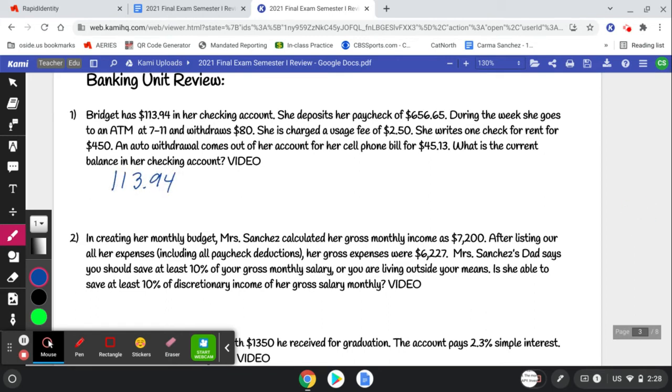So let's start with her starting balance of $113.94, and she deposits a paycheck, so that's going to be a plus. And then she goes to the ATM at 7-Eleven. She withdraws $80, and there's a usage fee, so it's really like $82.50. She writes a check for rent, so that's also going to be a subtraction. And then an auto withdrawal for the cell phone bill.